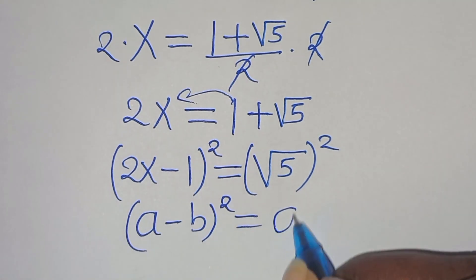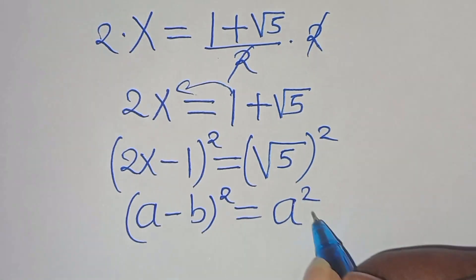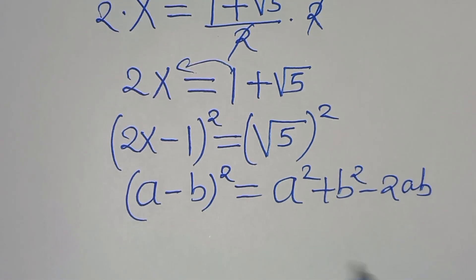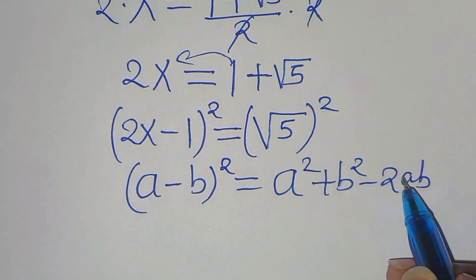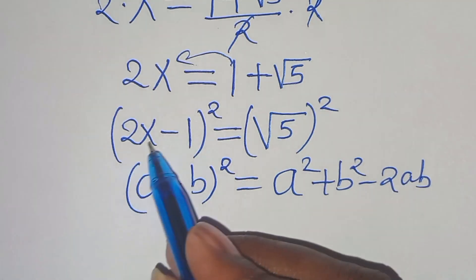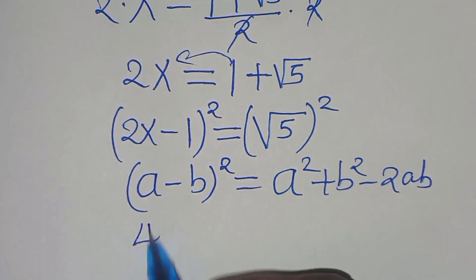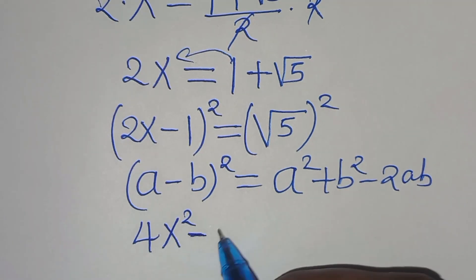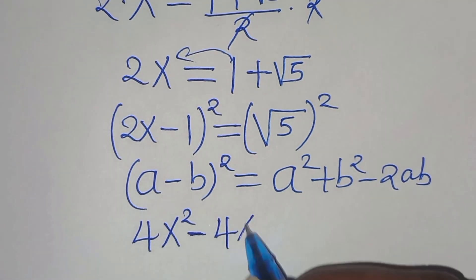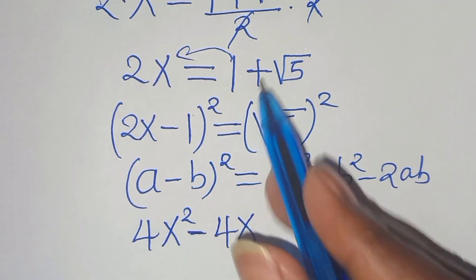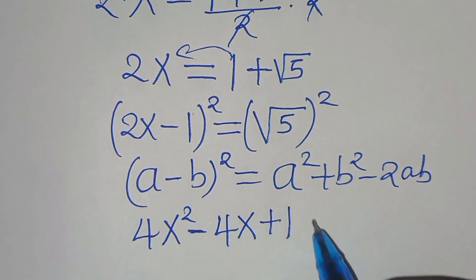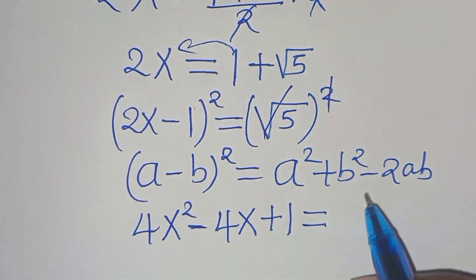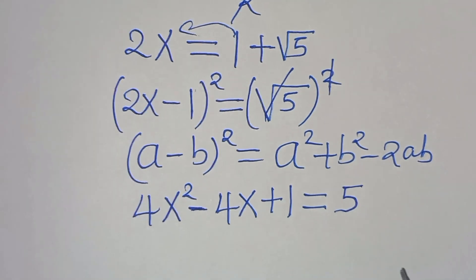The next step is to square both sides. Now 2x minus 1 to the power of 2 is in the form of a minus b to the power of 2, which equals a squared plus b squared minus 2ab. Applying this algebraic identity, we have 4x squared minus 4x plus 1, and this is equal to 5.